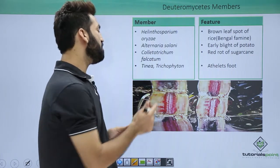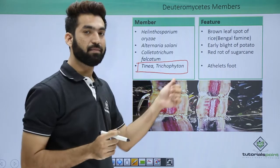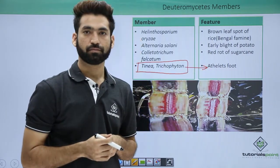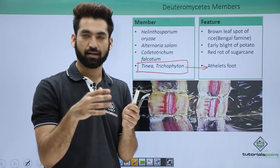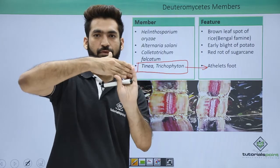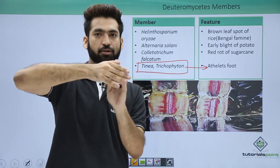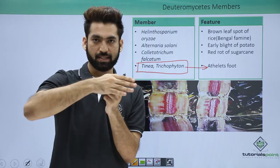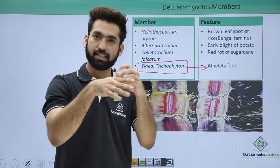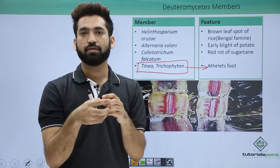Two very important members are Tinea and Trichophyton, both related to athlete's foot. If you look at your foot, you have four toes and the spaces between them. When we wear slippers, the strap holds and absorbs moisture in those spaces. But athletes who run wearing shoes don't wear open slippers, so moisture gets deposited between the toes.